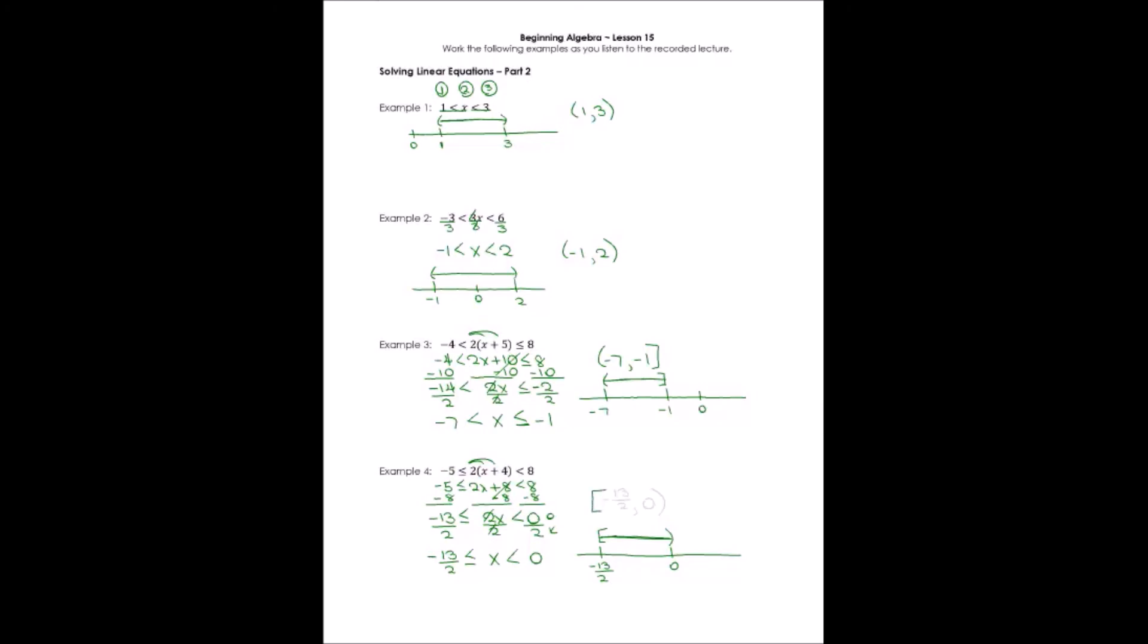The smallest number I can reach, negative 13 halves. And it does include it. Comma, the largest, zero, does not include. And those are my set notations and my graphing for these inequalities.